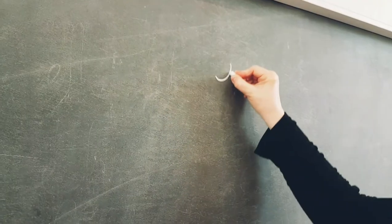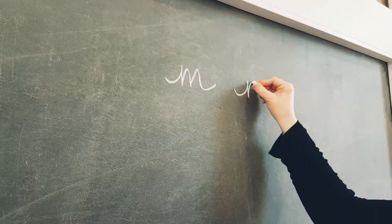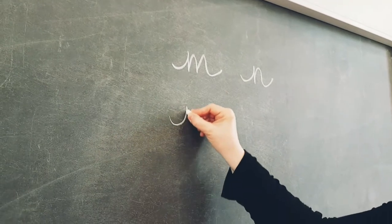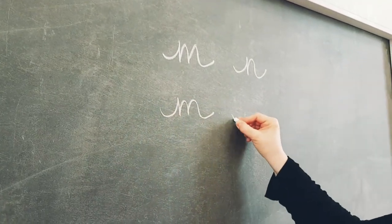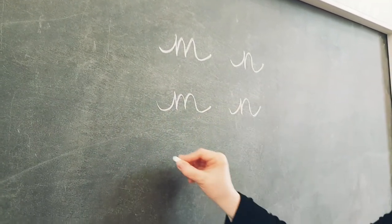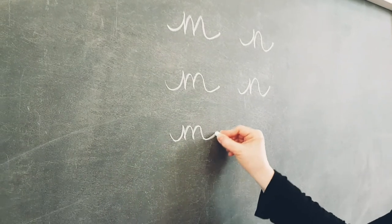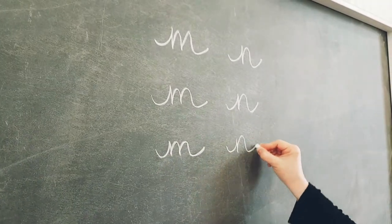The last letters we're going to do today are M and N. Again, they look very similar to one another, but the difference is the number of humps. Again, practice makes perfect, so make sure you repeat each letter as much as you can.